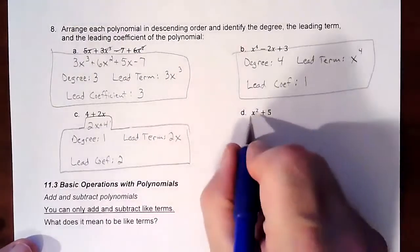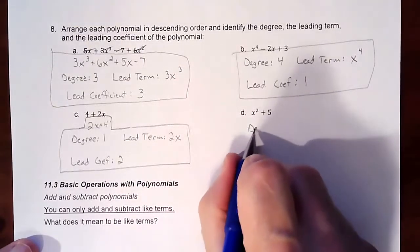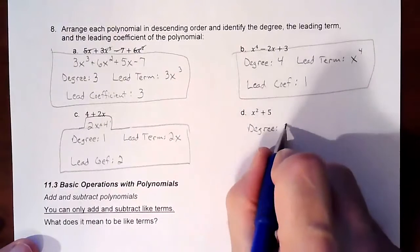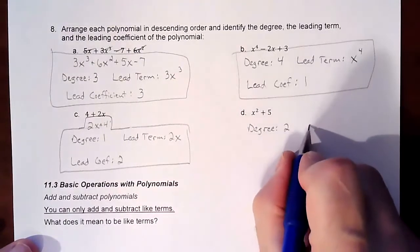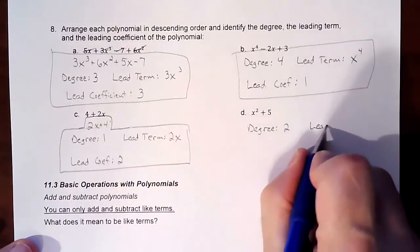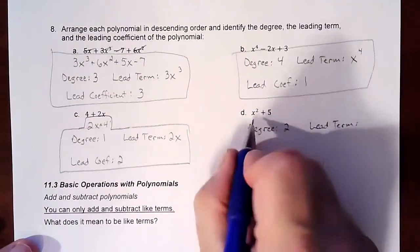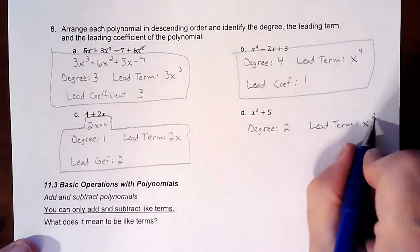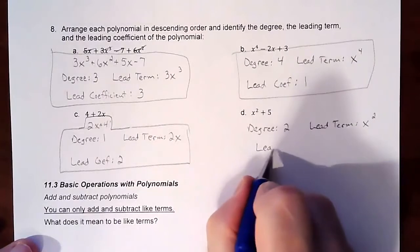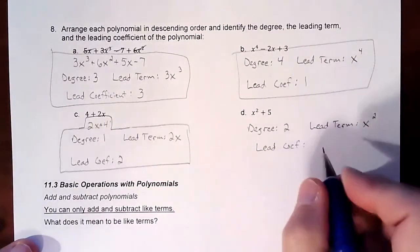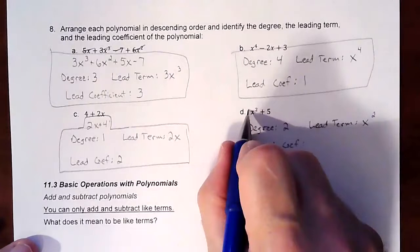And then this one is in order already, so we'll do everything with that. Our degree is 2. Our leading term is x squared, and the leading coefficient is a one again.